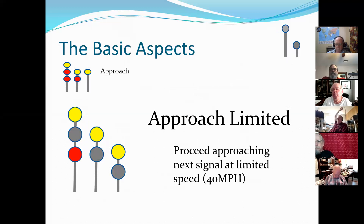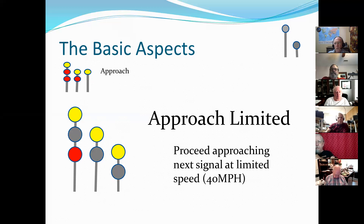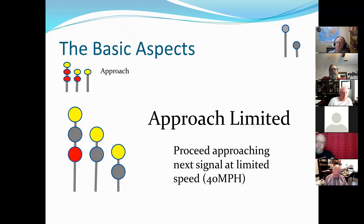Approach limited: now we start using that upper head again, which gives us the approach aspect. The next head down has a limited clear. So we can approach, but we have to approach the next signal at medium speed, not to exceed 40 miles per hour. Notice this isn't a diverging signal — this is on the main line. It says approach the next signal at this speed; it doesn't tell you to stop or be prepared to stop. That's the distinction between a basic approach and approach limited — this one's just telling you to be at medium speed by the time you arrive at the next signal. You might say it's an advanced warning.